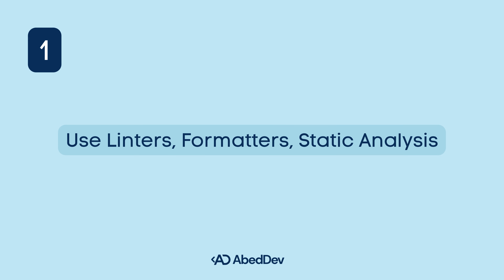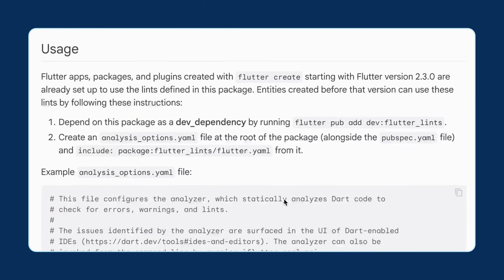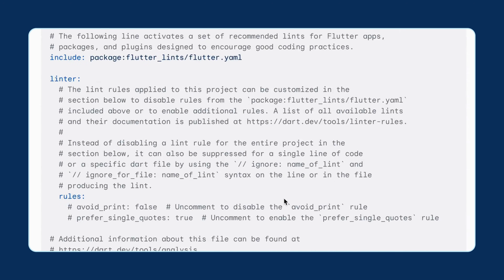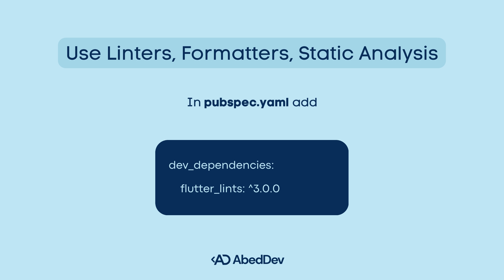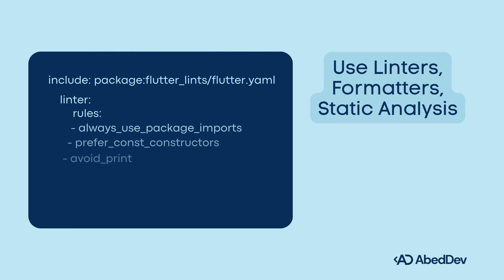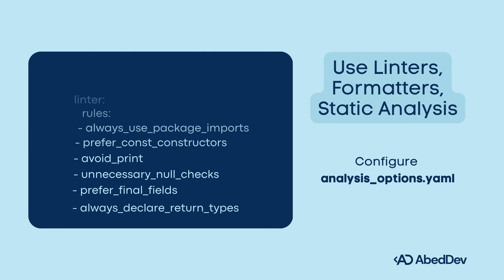Use linters for static analysis. Linters catch risky patterns and potential bugs early. Step 1: Add strict lint rules. In pubspec.yaml, add the flutter lints. Step 2: Configure analysis_options.yaml.